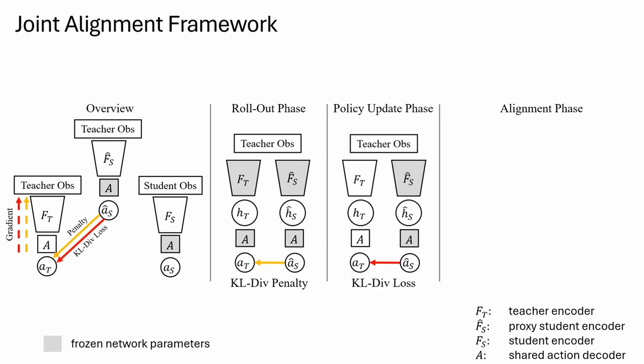During the policy update phase, we can update the teacher weights in a single backward pass through the loss combining the RL objective and the KL divergence term computed on the collected teacher experiences.